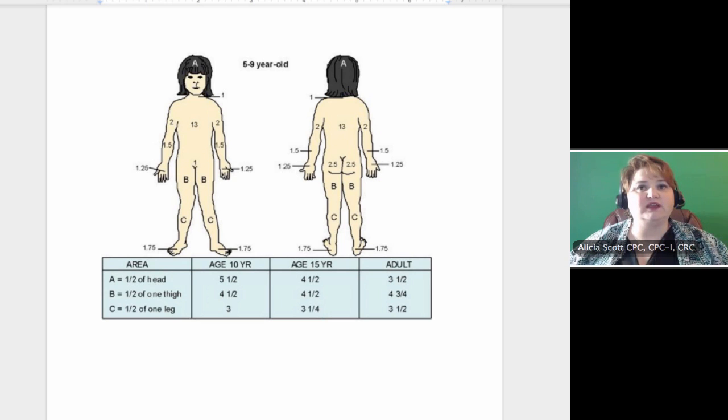But see how the half of the head in a 10-year-old is 5.5, 15-year-old 4.5, and adult is 3.5 because it's percentage of the body. So the bigger you are, the less percentage of the body is involved. So quite simple.